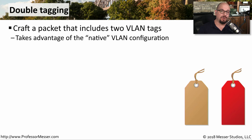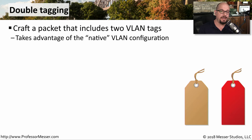Normally, when a frame is sent across a trunk connection, a tag is added to that frame. On the other side, that tag is evaluated and removed, and the data is sent to the correct VLAN. One way to get around this functionality is to include two tags with a particular frame going over a VLAN. With double tagging, we're able to use the native VLAN of a switch to gain access to a VLAN that we would not normally have access to.